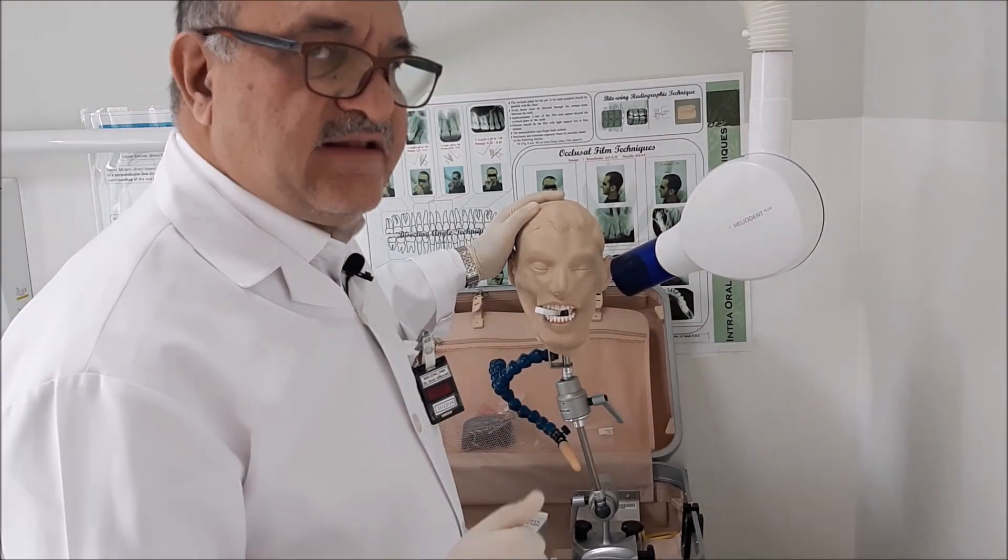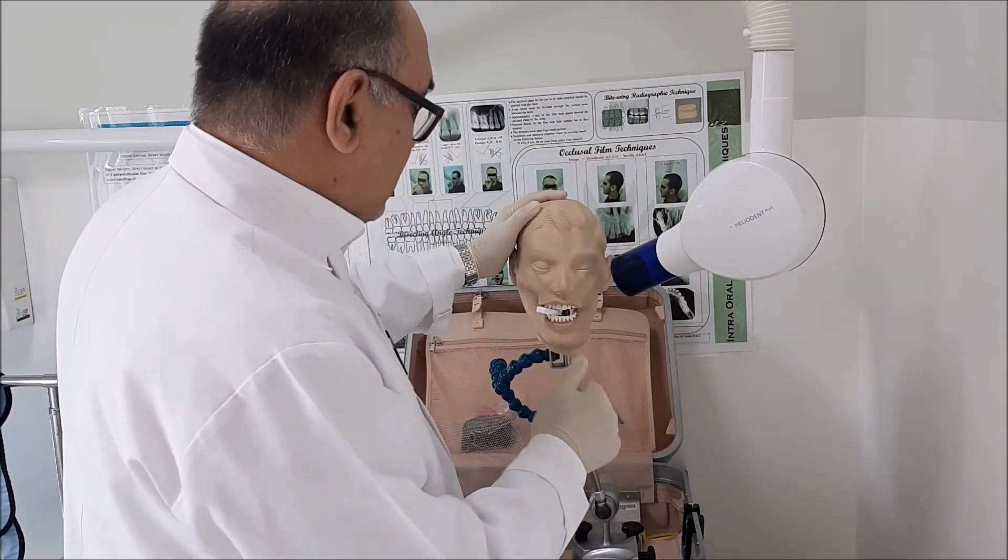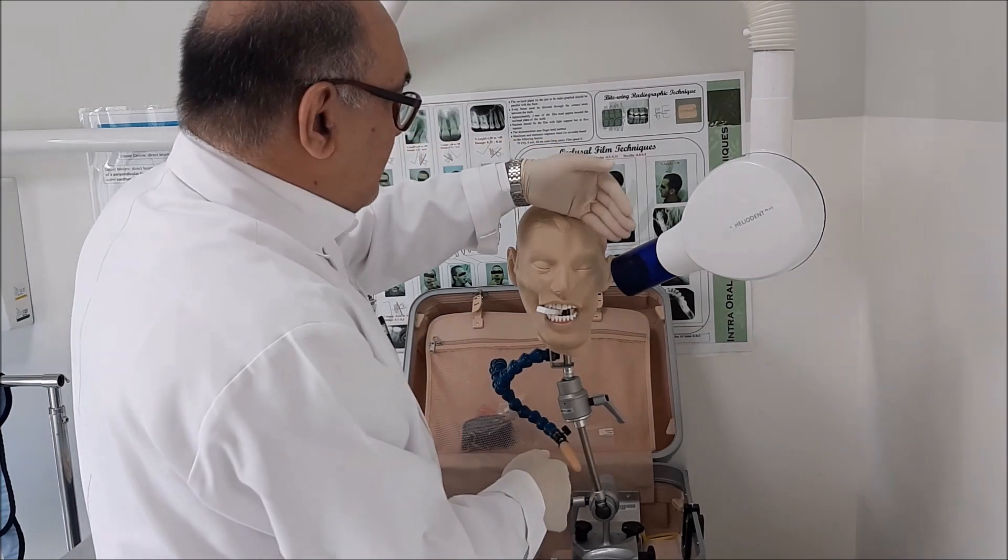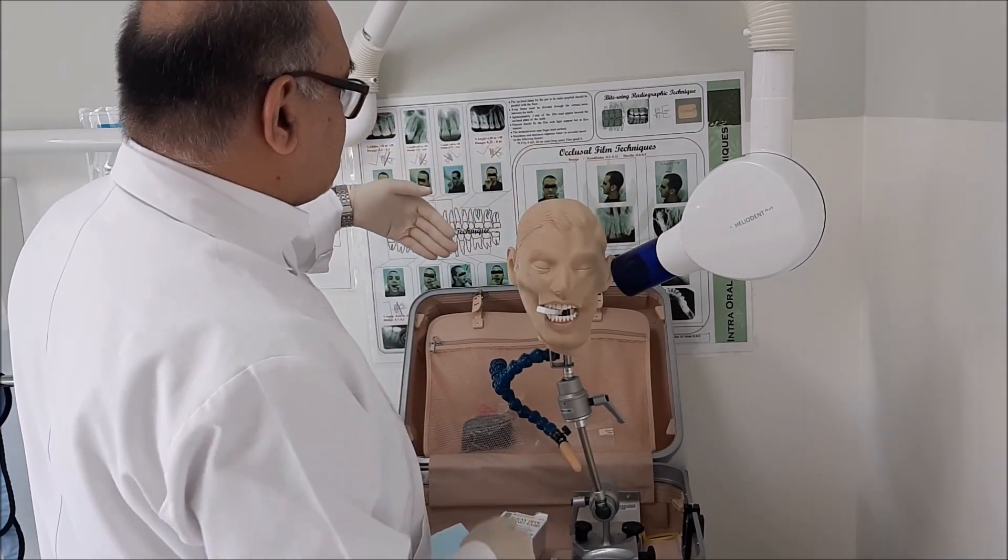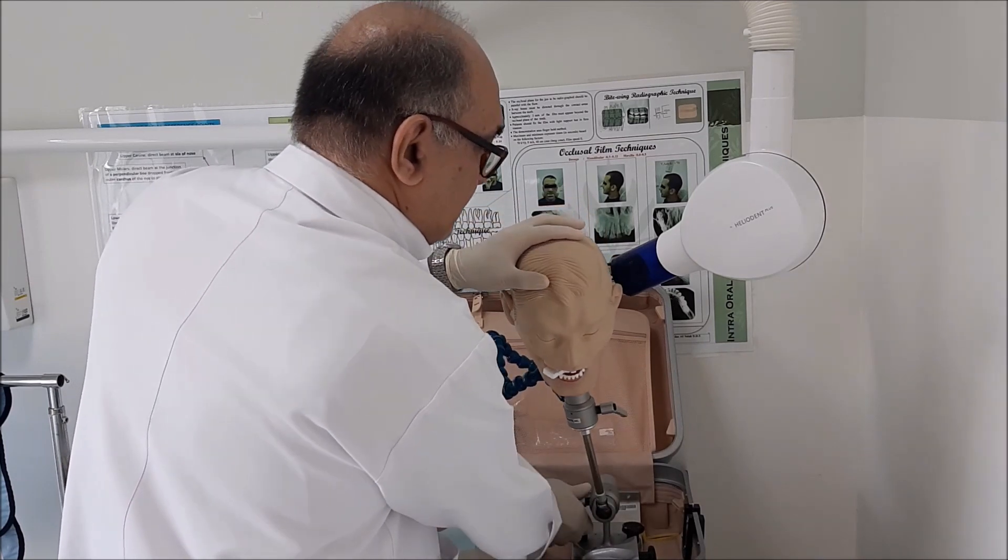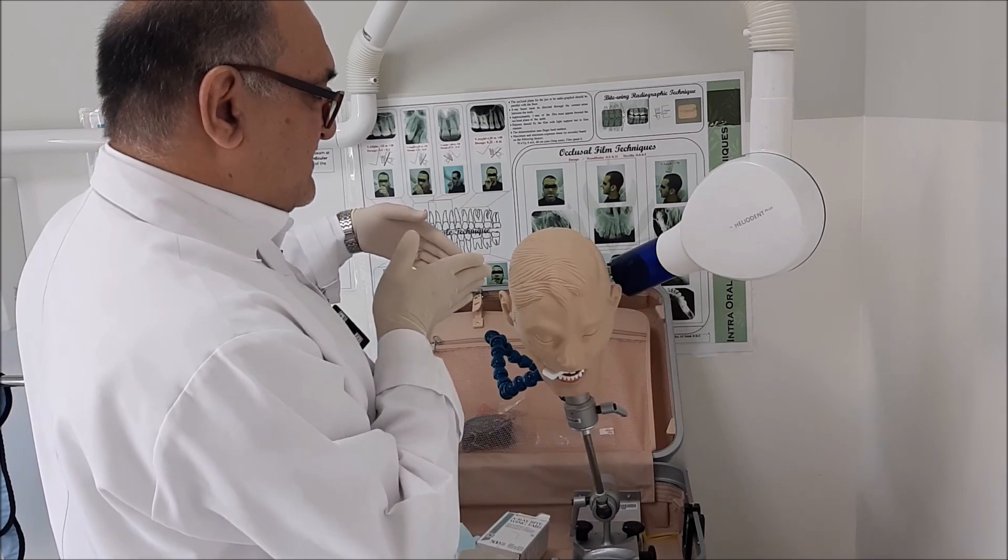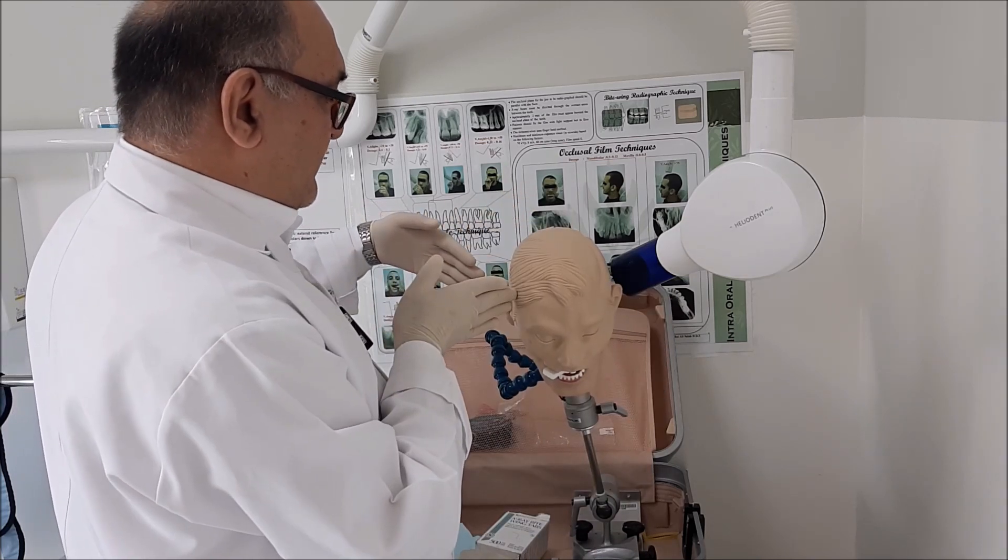So where to stand in the molar and the premolar area, upper and lower. Simple. This is the X-ray, so this is 180 degrees. X-ray is coming from this direction. This is the 180, and this is the 90 over here.